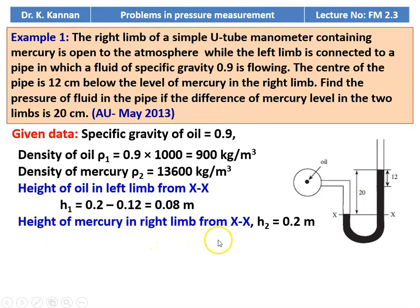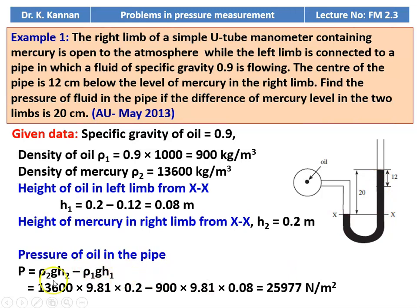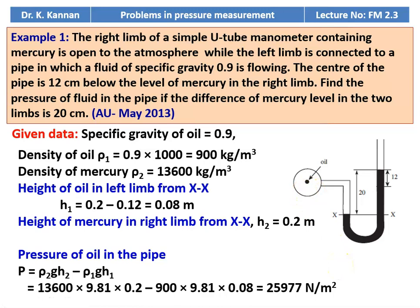The height of mercury in the right limb above XX is 0.2 meter. Pressure of the oil in the pipeline: P equals ρ₂gH₂ minus ρ₁gH₁. So, 13,600 × 9.81 × 0.2 minus 900 × 9.81 × 0.08 equals 25,977 newtons per meter square. The pressure of the oil in the pipeline is 25,977 newtons per meter square.